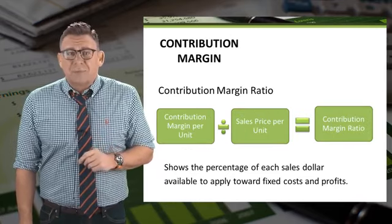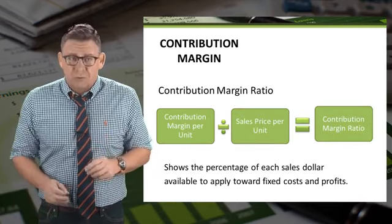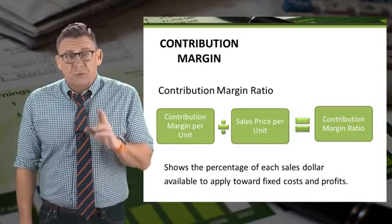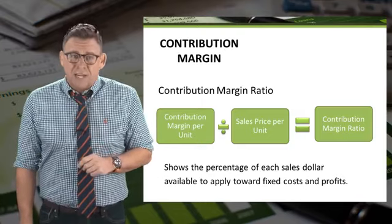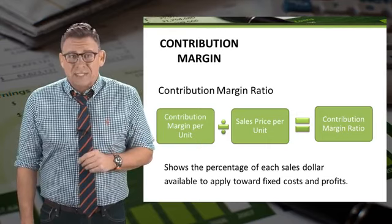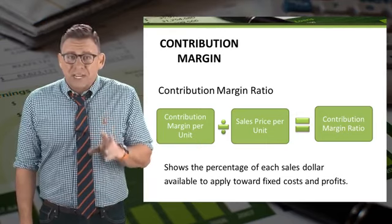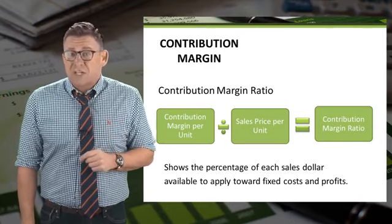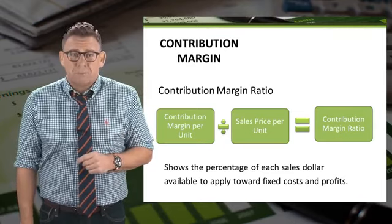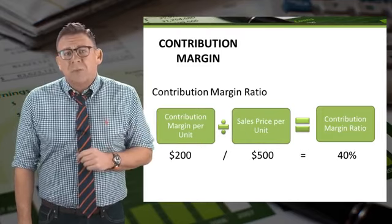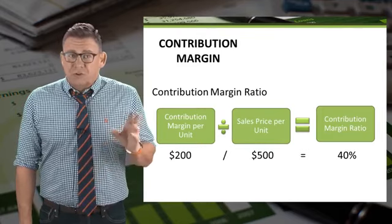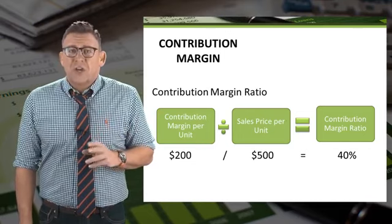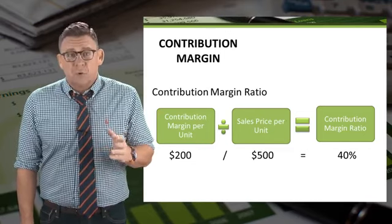Another important concept is the contribution margin ratio. It is calculated by taking contribution margin per unit and dividing it by the unit price. It is a percentage of each sales dollar that is available to cover fixed costs and normal profits. In this example, the unit contribution margin is $200 and the unit price is $500, so the contribution margin ratio is 40%.